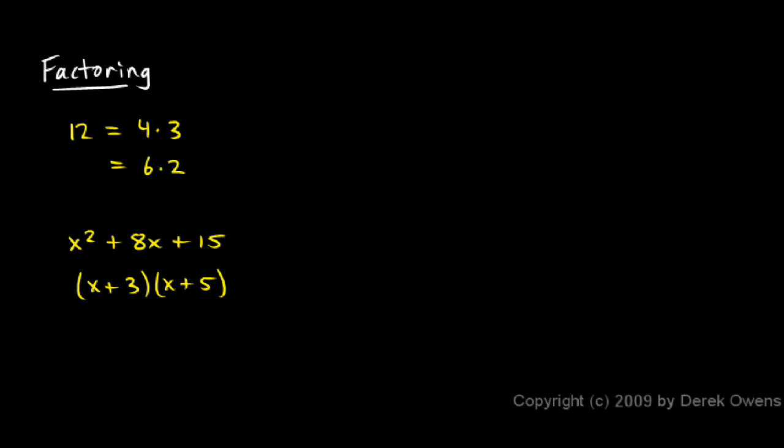Here's why factoring can be difficult. We know that 4 times 3 equals 12 because we've memorized multiplication tables way back in first or second or third grade. We've learned that 4 times 3 is 12.